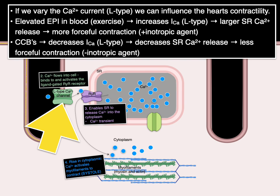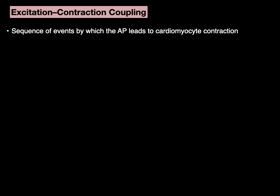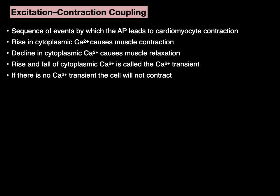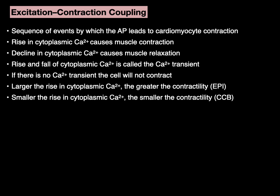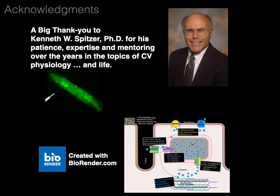In summary, excitation-contraction coupling is a sequence of events by which the action potential leads to cardiac myocyte contraction. A rise in cytoplasmic calcium causes muscle contraction; a decline causes muscle relaxation. The rise and fall is called the calcium transient — if there's no calcium transient, the cell will not contract. The larger the rise in cytoplasmic calcium, the greater the contractility — think epinephrine. The smaller the rise, the smaller the contractility — think calcium channel blockers. And that, my friends, is excitation-contraction coupling in a nutshell. Thanks again to Dr. Spitzer for his mentorship in cardiovascular physiology and for that really cool guinea pig animation.